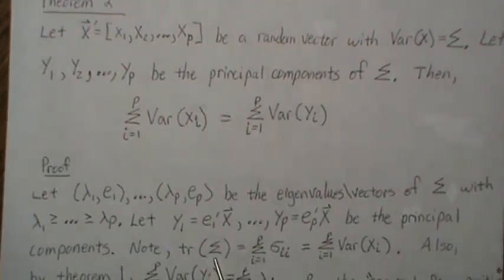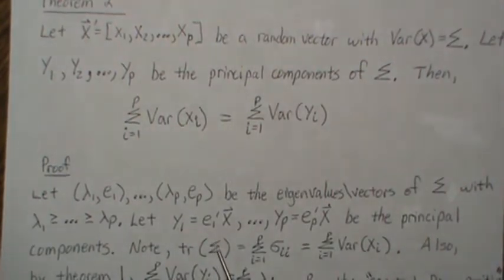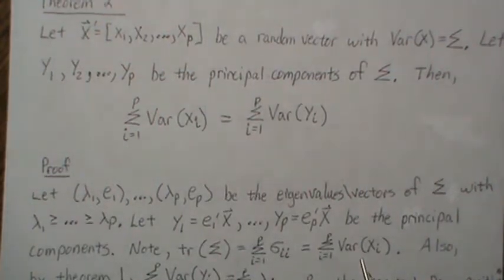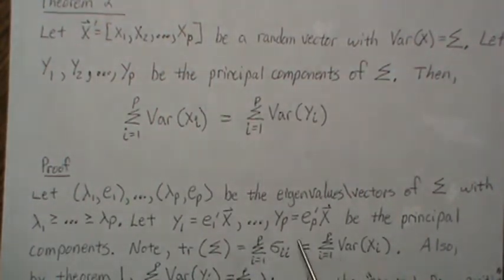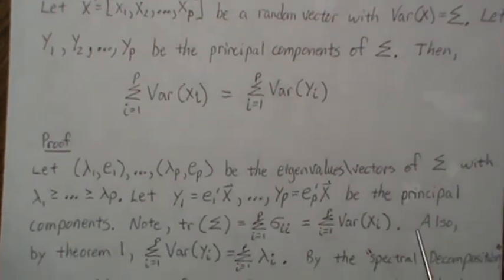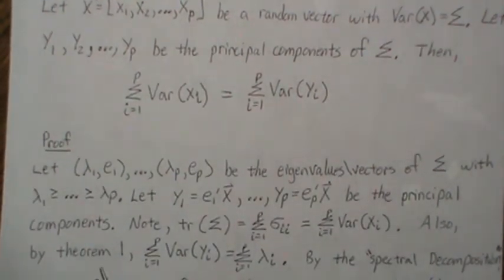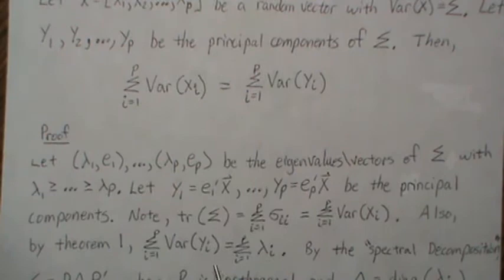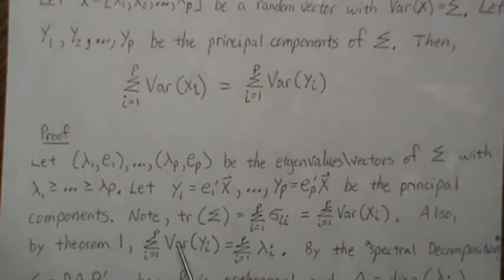Notice that the trace of the variance-covariance matrix — the trace means add up the diagonals, which means we're adding up the variances. So this trace is the sum of the variances of the x's. Also note by theorem 1 that the sum of the variances of the yi's is the sum of the lambdas, because the variance of yi is lambda i. So the sum of these variances is the sum of the lambdas.